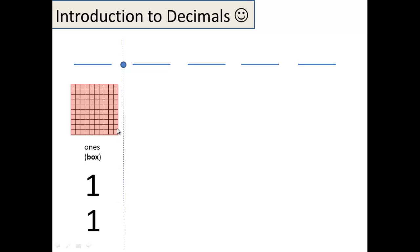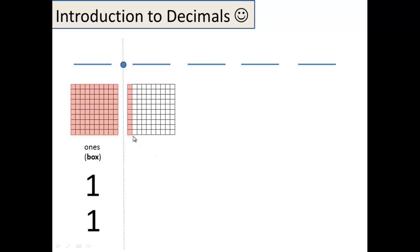As soon as you cross this line into decimal land, you start breaking things up into ten equal pieces. So if I cut this whole up into ten equal pieces, one of those pieces would look like this. We like to call that place name the tenths. I like to pronounce the 'th' just to know that you are saying decimal tenths versus tens, which is all the way over here. So tenths — we call them bars. They're worth one tenth and look like this as a decimal.